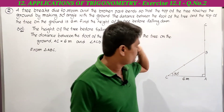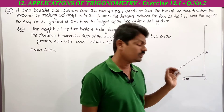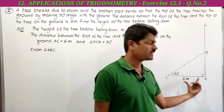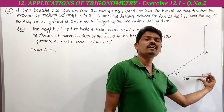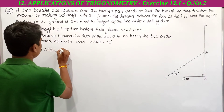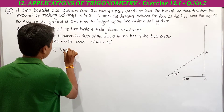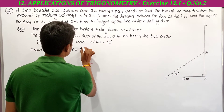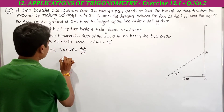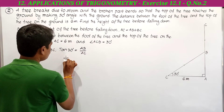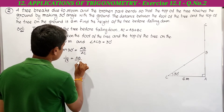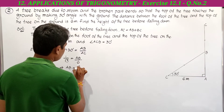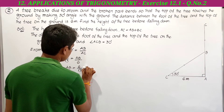First we find AB. With respect to 30 degrees, AB is the opposite side and AC is the adjacent side. So we apply tan. From triangle ABC, tan 30 equals opposite side by adjacent side, which is AB by AC. Tan 30 value is 1 by root 3. So 1 by root 3 equals AB by 6. Therefore AB equals 6 by root 3 meters.